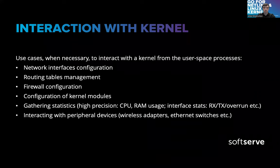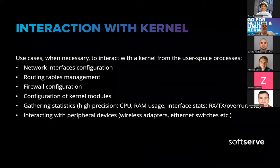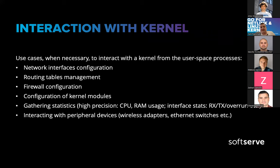First of all, we need to understand why we want or need to interact with the Linux Kernel from user space applications or processes. From my perspective, if you want to configure something like network interfaces — you can add interfaces, modify them, configure IP addresses. And when you change a network interface, you'll also want to change the routing tables, because you have a new interface, or you're changing the subnet, or you want to configure a firewall in your Linux host.